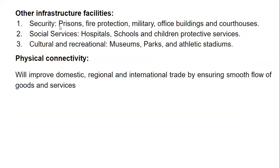There are other infrastructure facilities as well. Soft infrastructure security includes proper prisons, fire protection, military, office buildings, and courthouses, which ensure proper law and order. Social services include hospitals, schools, and children's protective services. Cultural infrastructure includes museums, parks, and athletic stadiums. In this chapter, we will specifically focus on physical connectivity. You should know about the other types of infrastructure, but right now in this chapter, we are just going to focus on physical connectivity.